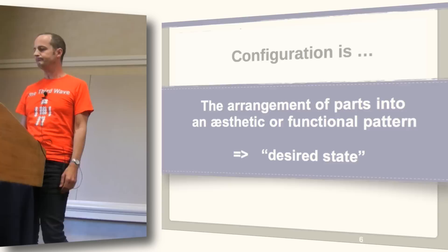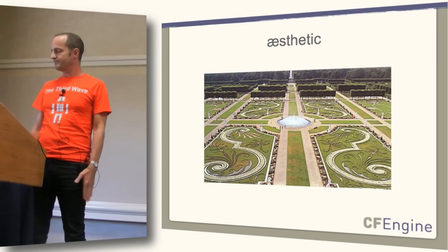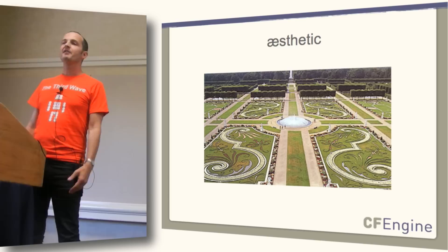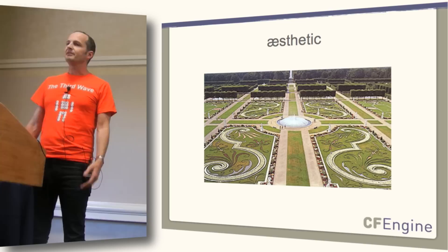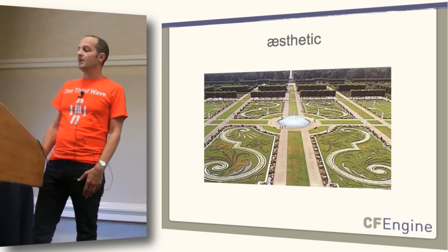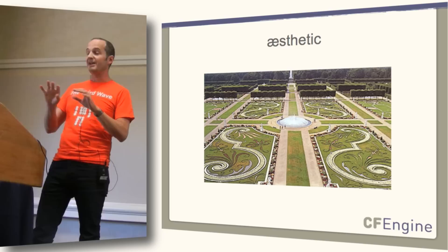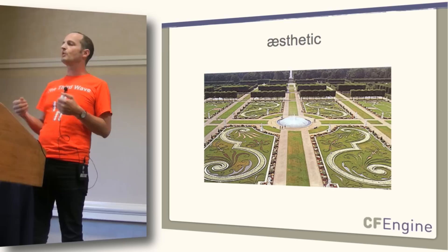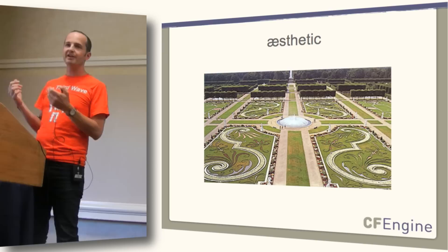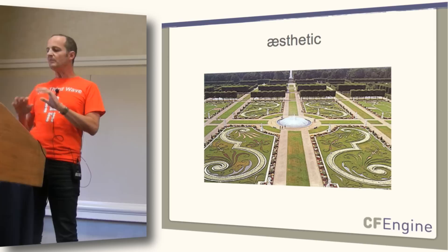We may have seen some of this before. Here is some configuration management from the 18th century — a beautiful garden. One of the things that Britain and Japan share in common is a lot of fantastically configured gardens. This garden has an aesthetic pattern and some functions as well. People walk around it and enjoy it. It contains dynamical parts and static parts. Some of them are trees — they're alive, changing by themselves from within.